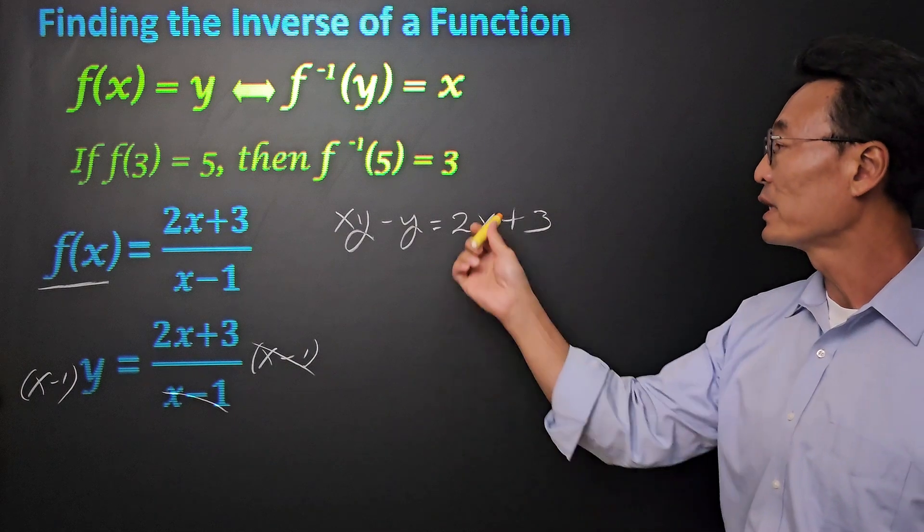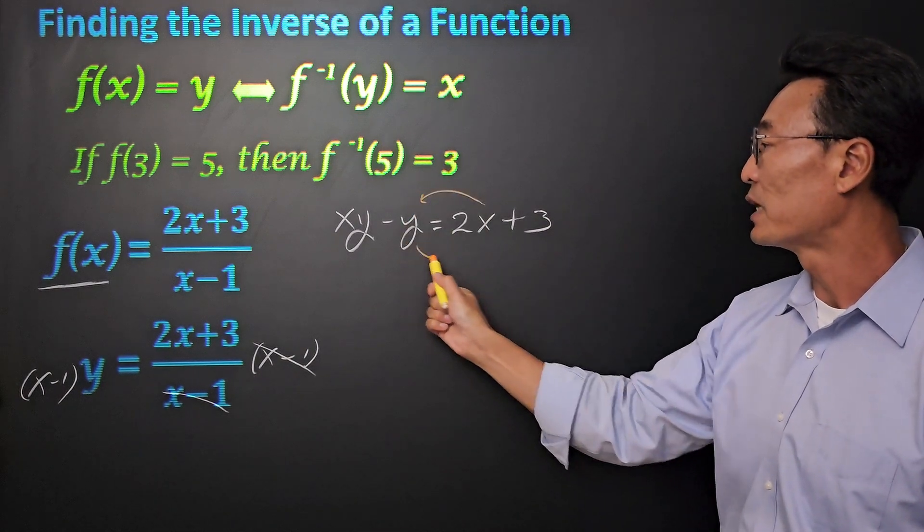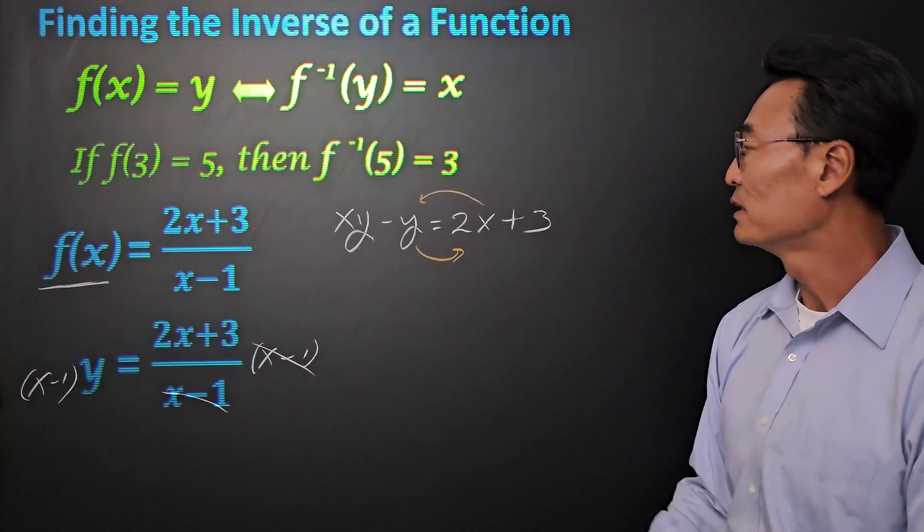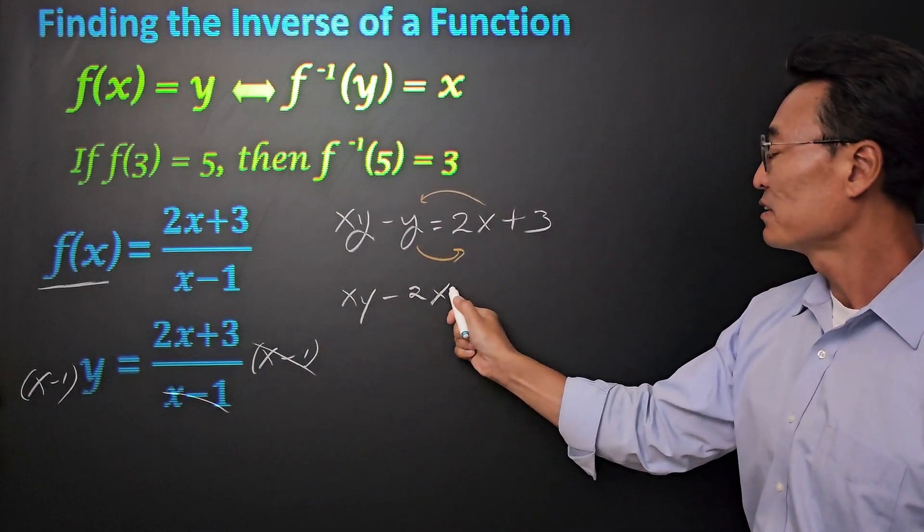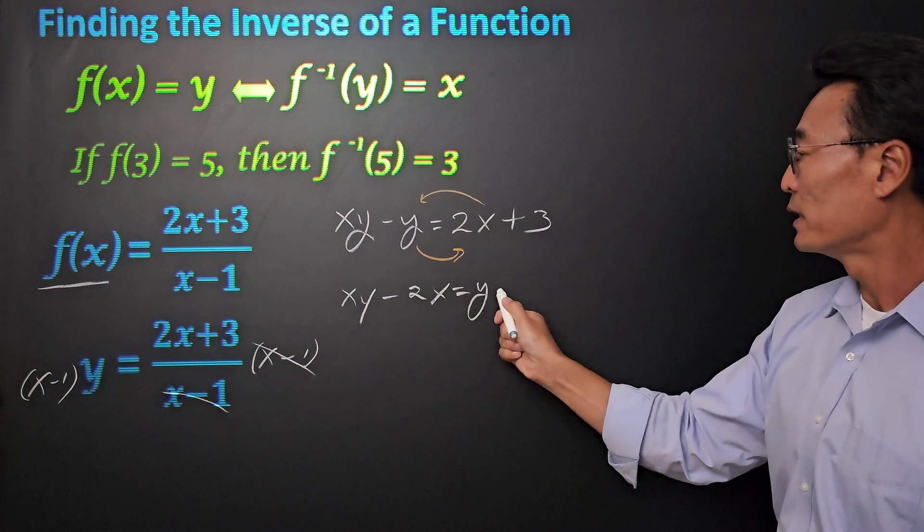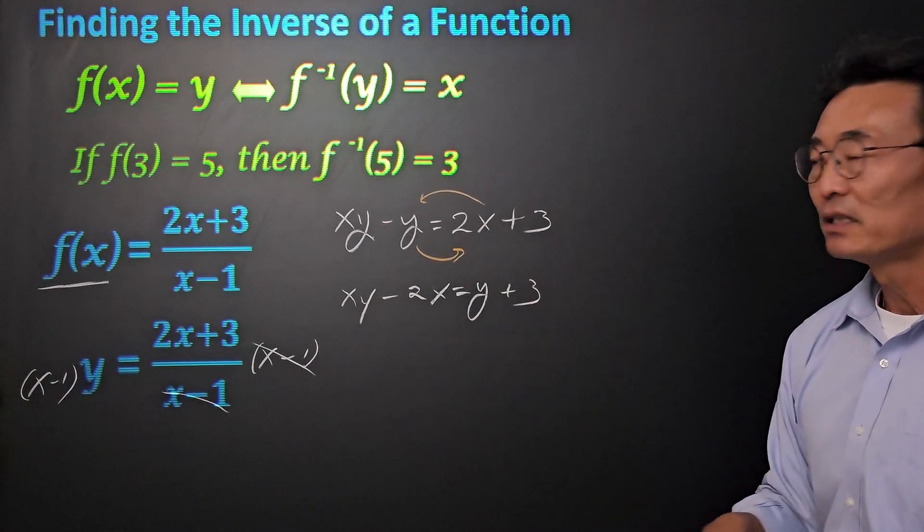Next, we want to bring everything with x to the left side and everything without x to the right side, giving us xy minus 2x equals y plus 3.